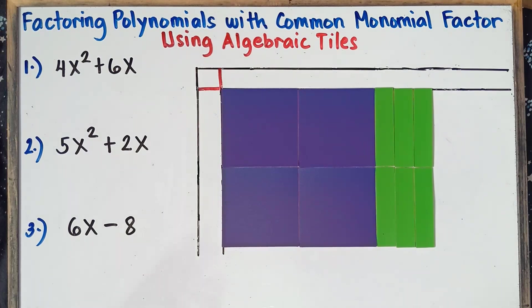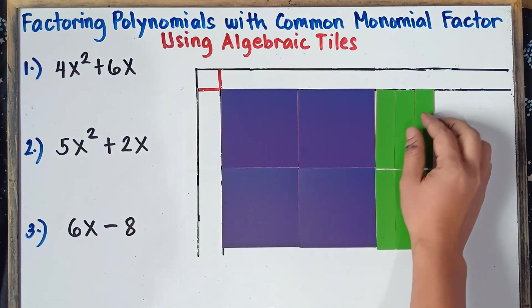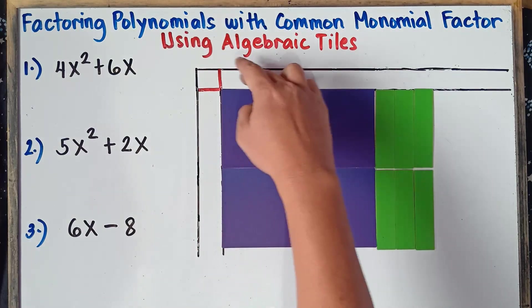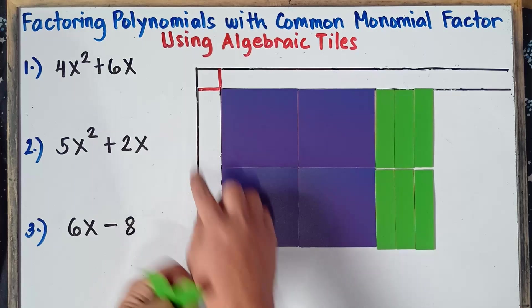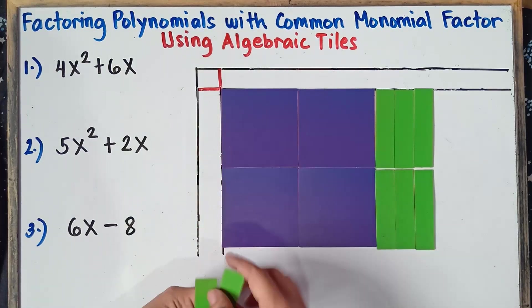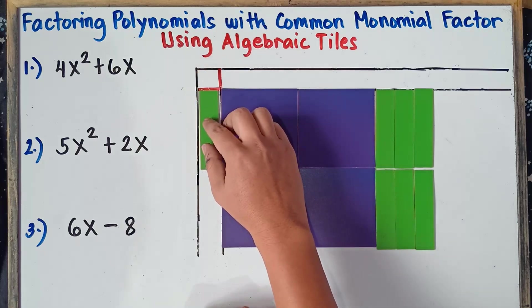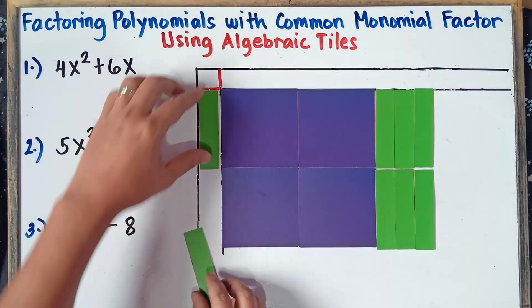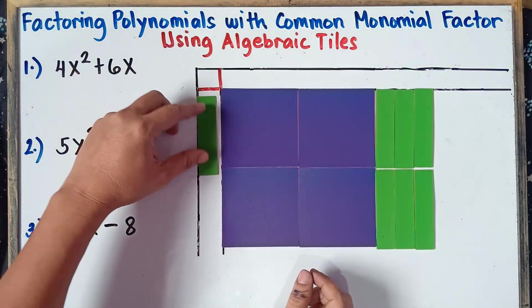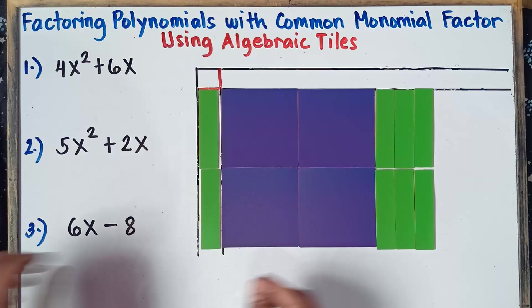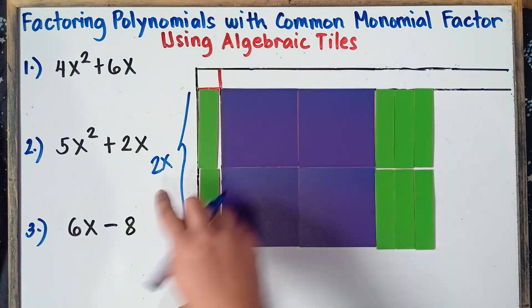Once you form a rectangle, simply get the width and the length — that will be your factors. So the measure of the width: this tile is x and another x, so x plus x gives us 2x. The width is 2x.